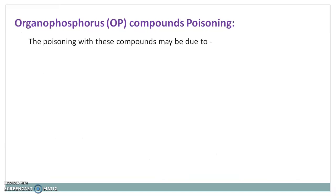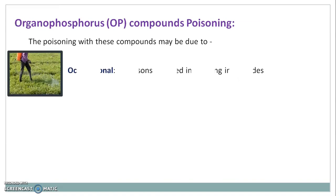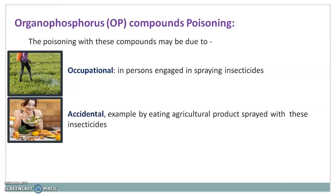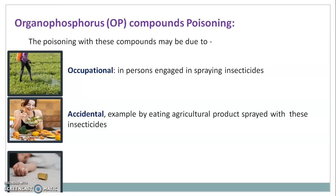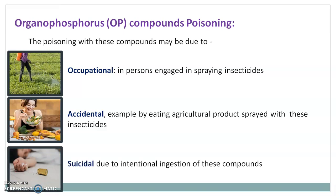Poisoning with these compounds may be due to: first, occupational — in persons engaged in spraying insecticides; second, accidental — for example, by eating agricultural products spread with these insecticides; and third, suicidal — due to the intentional ingestion of these compounds. So occupational, accidental, and suicidal are the causes behind organophosphorus compound poisoning.